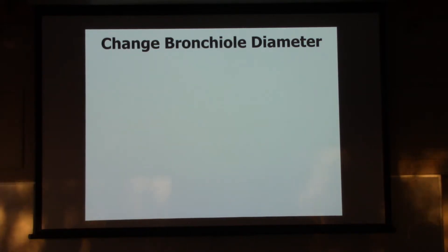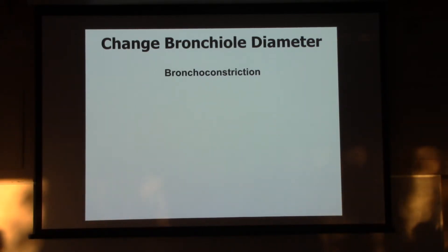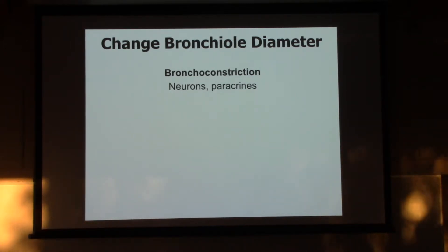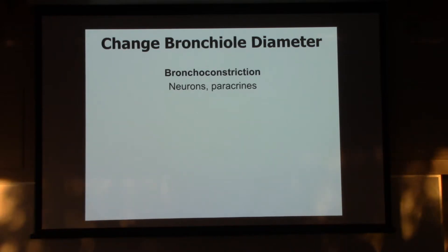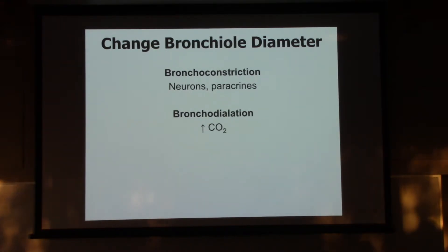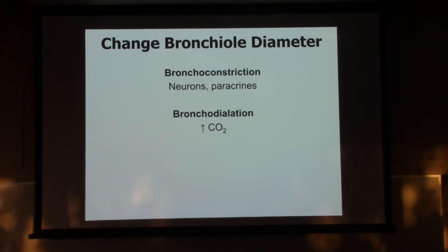What's going to cause changes in the bronchiolar radius or diameter? Bronchoconstriction - making your bronchioles skinnier, decreasing the radius - can be in response to neurons or paracrines. You can stimulate the smooth muscle in those walls to contract, which squeezes down on those bronchioles. Bronchodilation - what makes those smooth muscles relax and allows bronchioles to get larger? One thing could be a rise in carbon dioxide. Your body senses more CO2, makes those bronchioles larger, so it's easier to flush out that carbon dioxide.